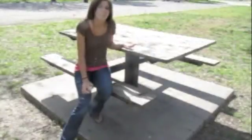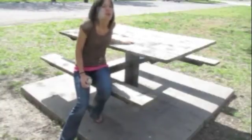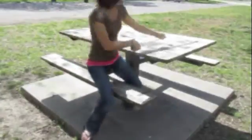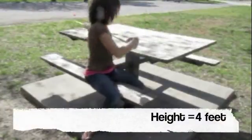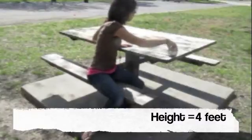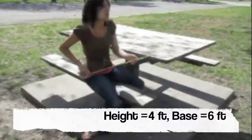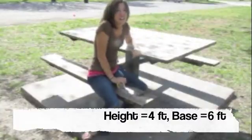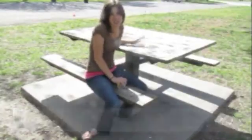Since area is the amount of space something takes up, let's say that we want to find a tablecloth for this picnic table. We need to know how much space the tablecloth needs to cover so we would find the area. Find the area by finding the height, which is 4 feet, and the base, which is 6 feet. To find the area of this picnic table, we're going to multiply the base times the height. What is 6 times 4? 24, that's the area of this picnic table.